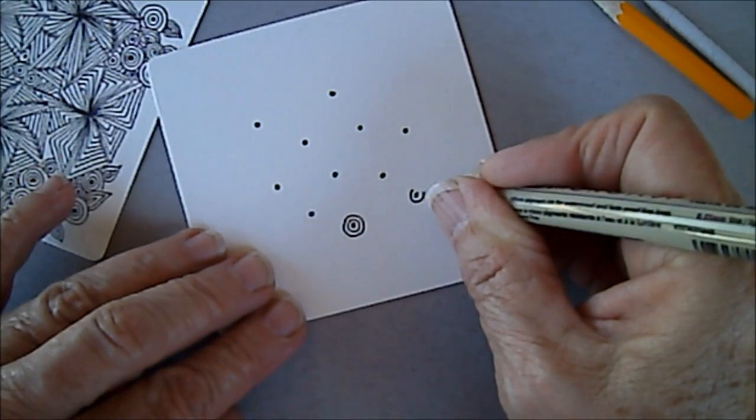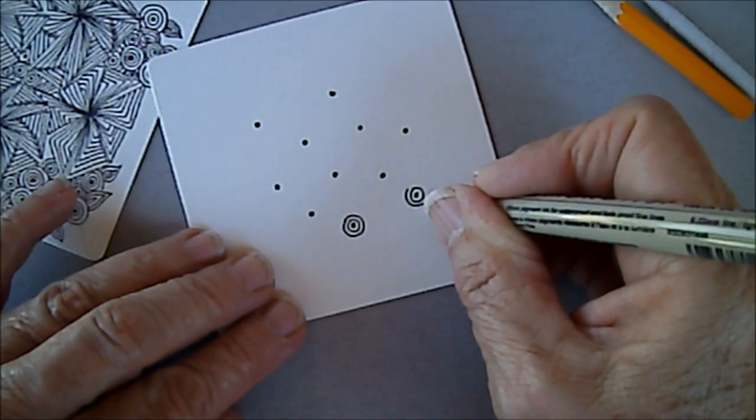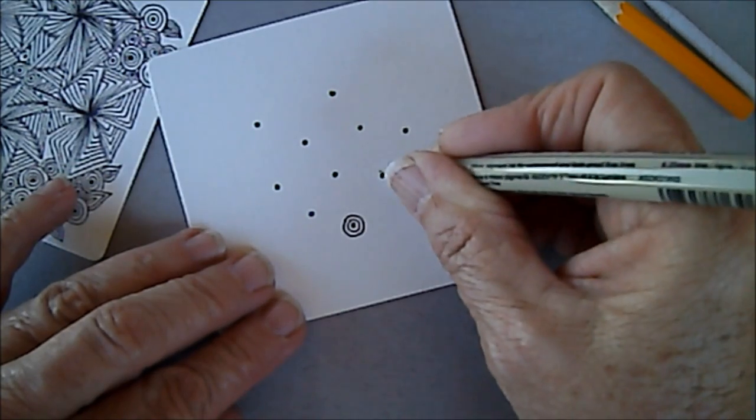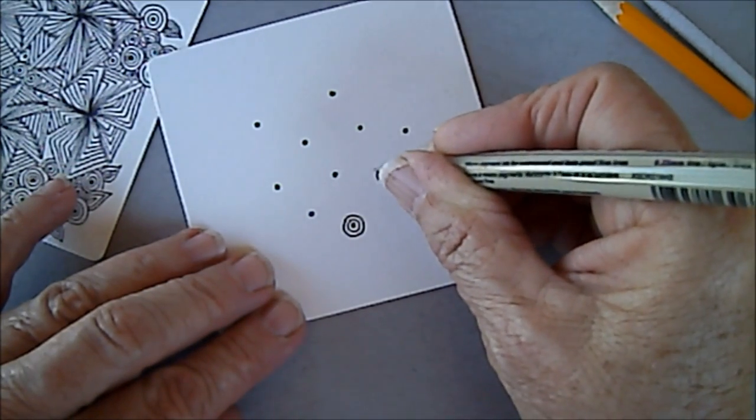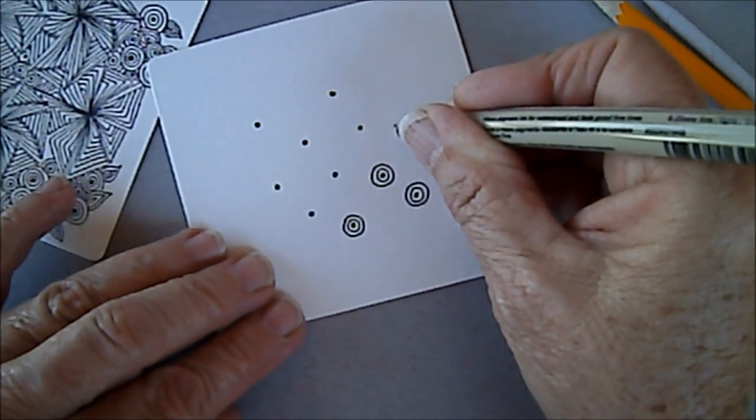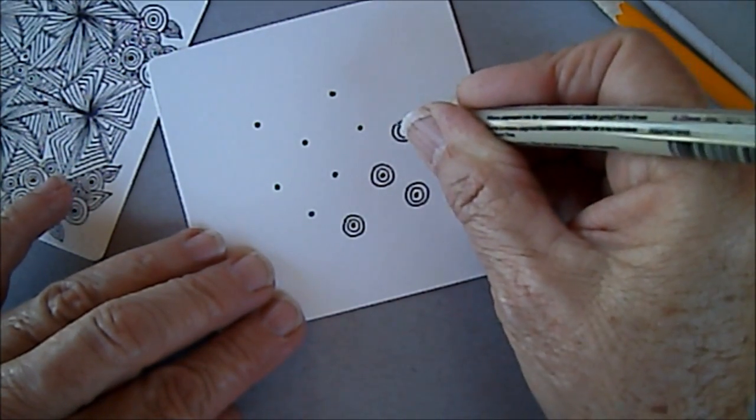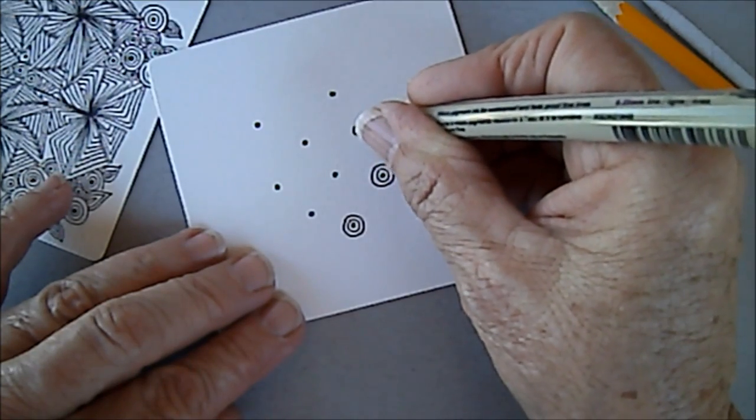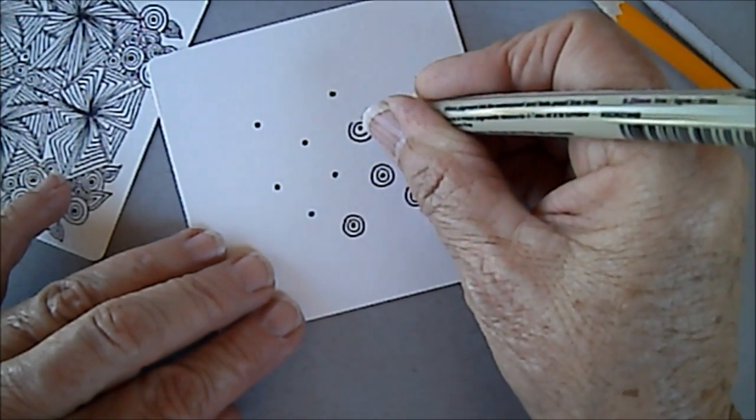This is a lot like C's in Zentangle.com, but you're going to see a little difference. In a little while you're going to see how it's a little different. And I'm putting two circles around right now.